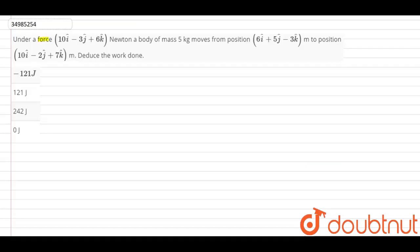Hello guys, this is your question. Under a force 10 i cap minus 3 j cap plus 6 k cap Newtons, a body of mass 5 kg moves from position 6 i cap plus 5 j cap minus 3 k cap to position 10 i cap minus 7 j cap plus 7 k cap meters. Deduce the work done.